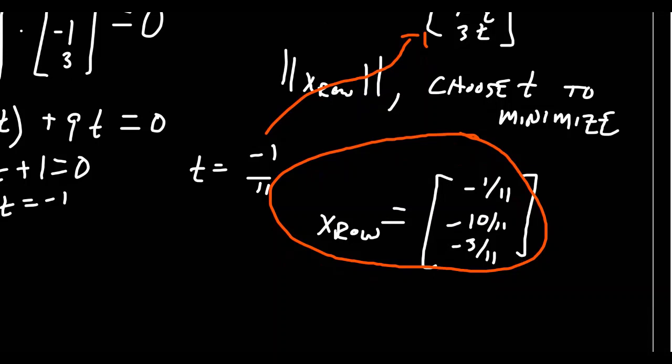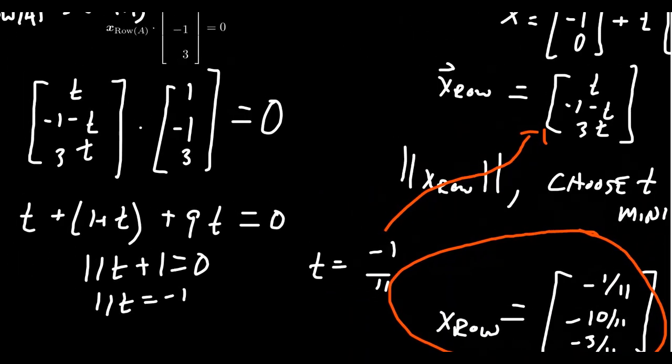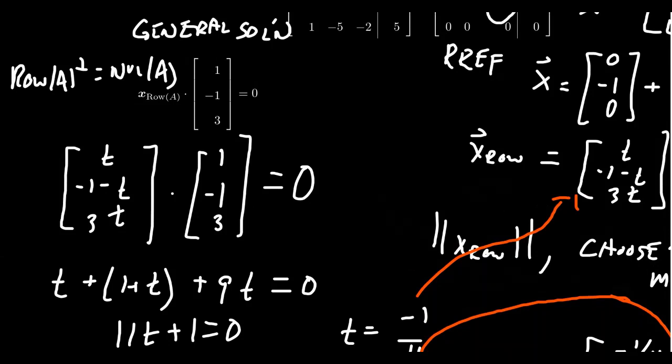Now, if the null space had a nullity greater than one, then this right here, there might be more than one equation. You're going to take X-row times each and every basis element to the null space. And that might actually give you a system of equations for which you solve for all the multiple parameters as well.